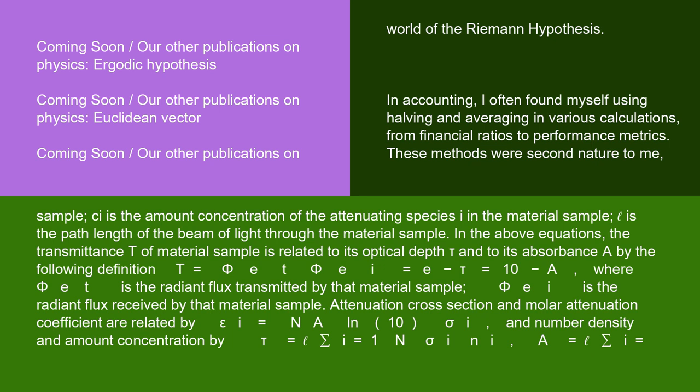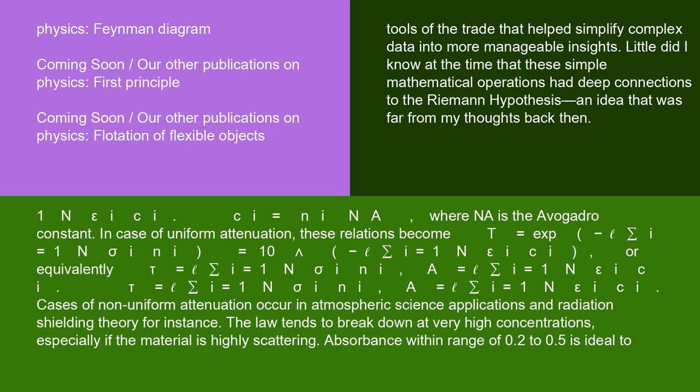Where Φ_et is the radiant flux transmitted by the material sample and Φ_ei is the radiant flux received by that material sample. Attenuation cross-section and molar attenuation coefficient are related by εᵢ = Nₐ ln(10) σᵢ, and number density and amount concentration by cᵢ = nᵢ/Nₐ, where Nₐ is the Avogadro constant. In case of uniform attenuation, these relations become: T = exp(−Σᵢ σᵢ nᵢ ℓ) = 10^(−Σᵢ εᵢ cᵢ ℓ).